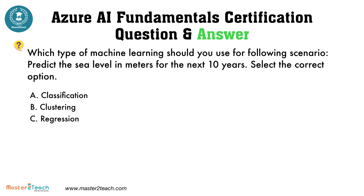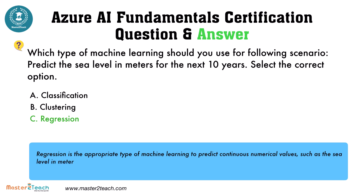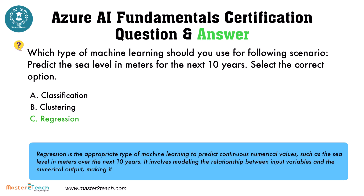The correct answer is Regression. Regression is the appropriate type of machine learning to predict continuous numerical values, such as the sea level in meters over the next 10 years. It involves modeling the relationship between input variables and the numerical output, making it suitable for this scenario.